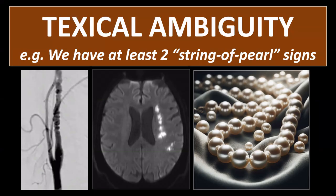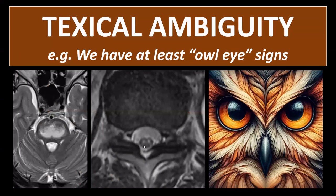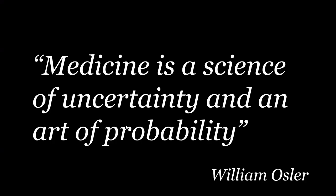There is also the problem of lexical ambiguity — the same sign name used for two different entities. For instance, there are two 'string of pearls' signs in radiology: one for fibromuscular dysplasia and one for internal watershed infarctions. Similarly, there are two 'H' signs: one for central pontine myelinolysis, and one for spinal infarction involving the anterior horns of the gray matter, also seen in infectious diseases like polio or polio-like disorders.